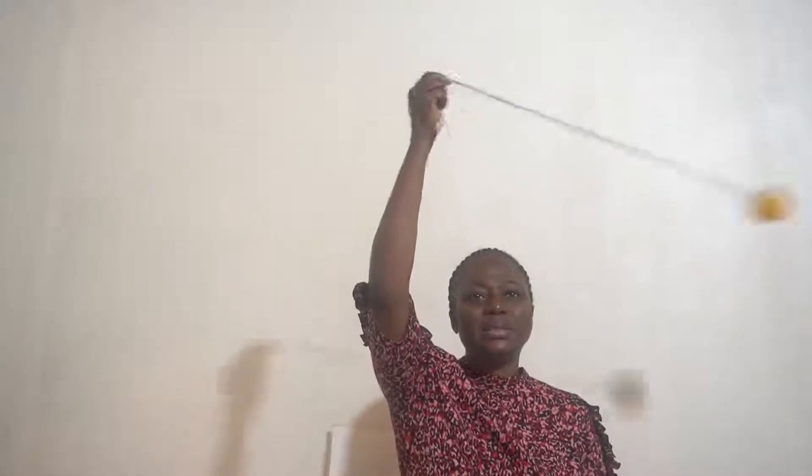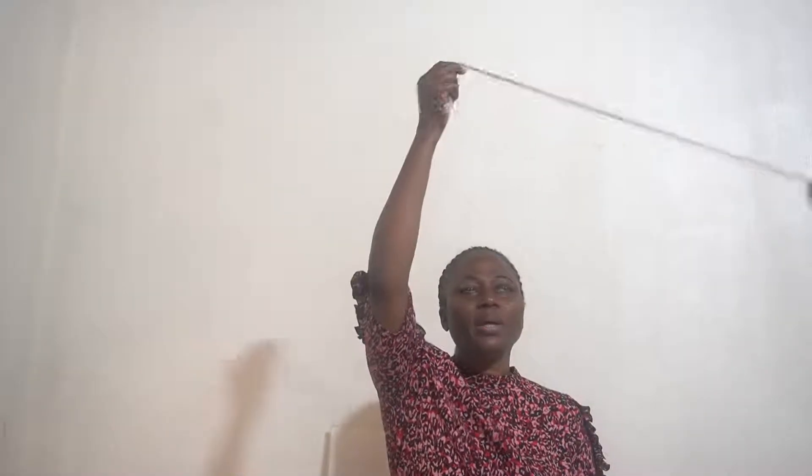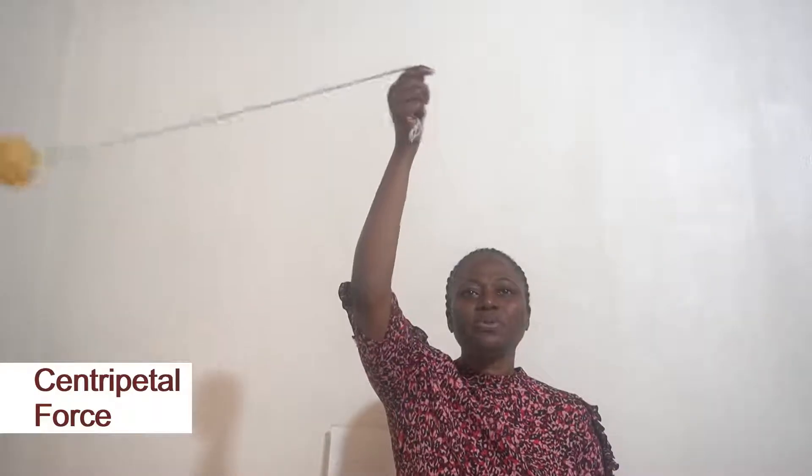When they move round and round the Sun like this, if you do this experiment or this activity, you'll find that there's a pull. You feel a pull from the ball and the string. This kind of pull has a name. It's called a centripetal force.